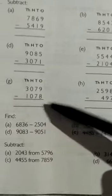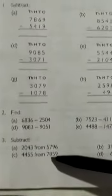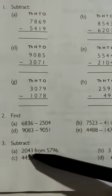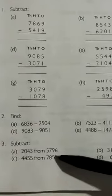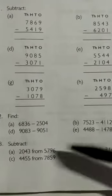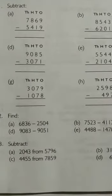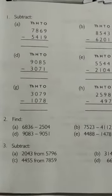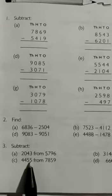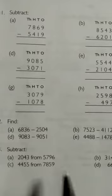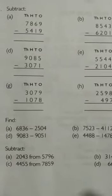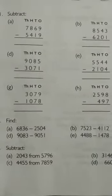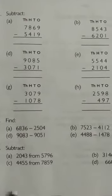Question number three: subtract two thousand and forty-three from five thousand seven hundred and ninety-six. We have to subtract these two numbers, but which one is the minuend and which one is the subtrahend? Firstly, we will find which one is the minuend.